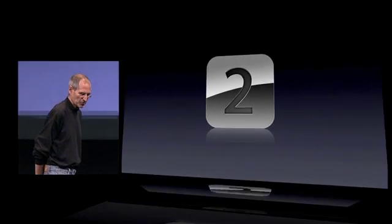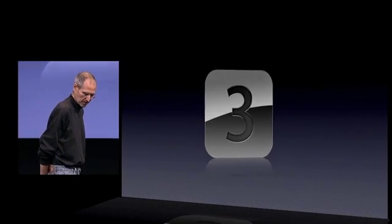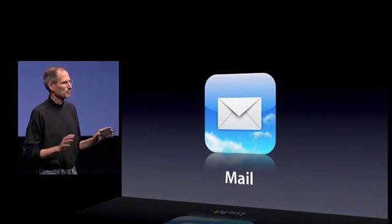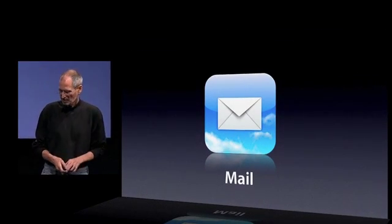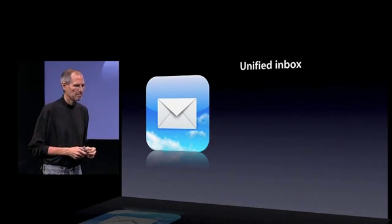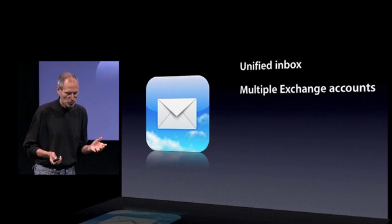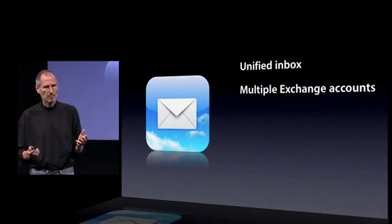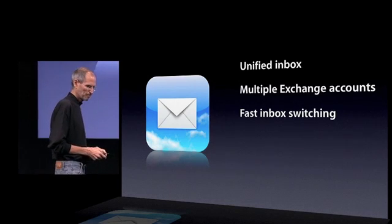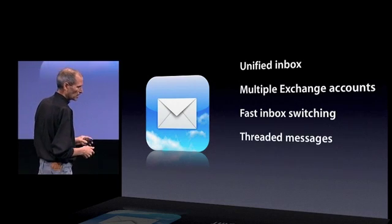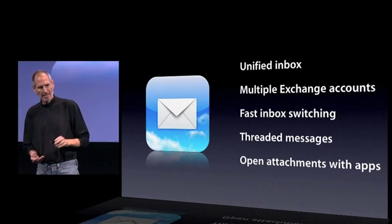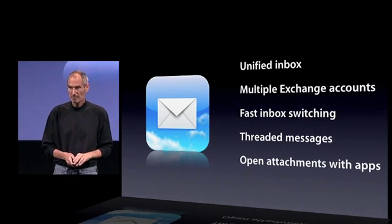Tent pole number three is an enhanced mail client. There's lots more, but the biggest improvements are the unified inbox with multiple Exchange accounts, fast inbox switching, threaded messages, and the ability to open attachments with apps.